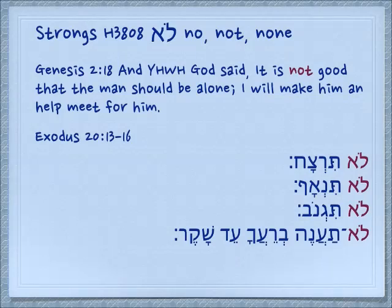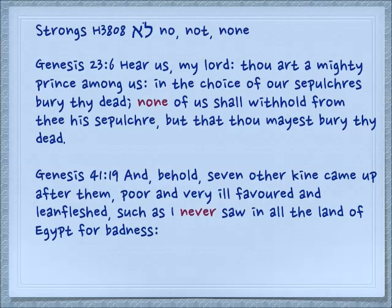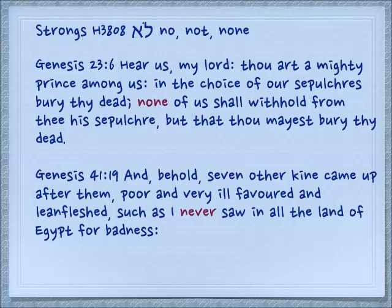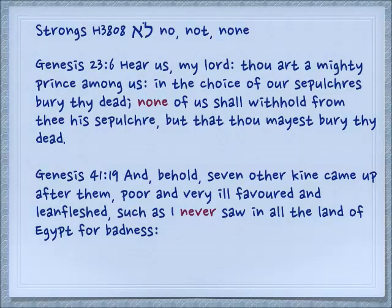There's a different word for temporary commandments. Genesis 23.6: 'Hear us, my Lord, thou art a mighty prince among us. In the choice of our sepulchres, bury thy dead. None of us shall withhold from thee his sepulchre, but that thou mayest bury thy dead.' Again, in a kind of a sense of permanence. Genesis 41.19: 'And behold, seven other kind came up after them, poor and very ill-favored and lean-fleshed, such as I never saw.' It simply says lo ra iti — I didn't see — but in the long-term sense, it's translated as 'never saw' in all the land of Egypt for badness.